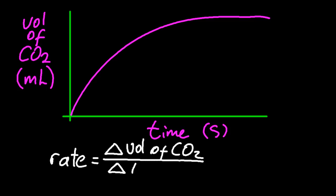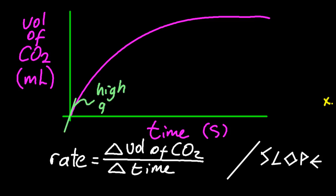If you remember, by definition is the change in concentration of reactants over time or change in concentration of products over time. And that's analogous, in this case, to the change in volume of carbon dioxide over time. And that's going to be the slope of the graph. That's going to be a tangent on the graph.